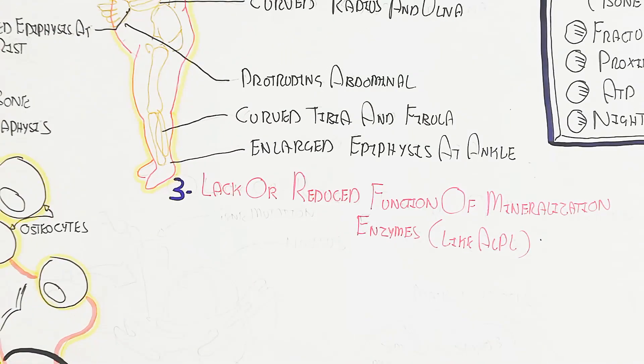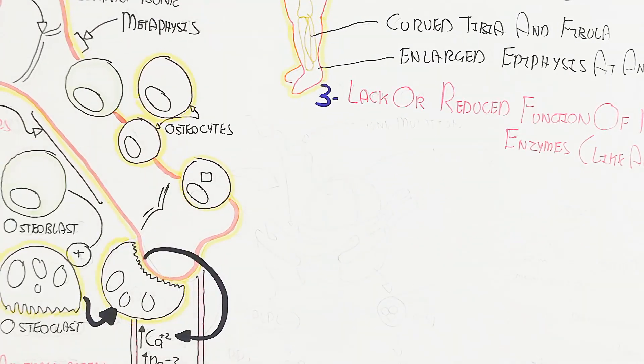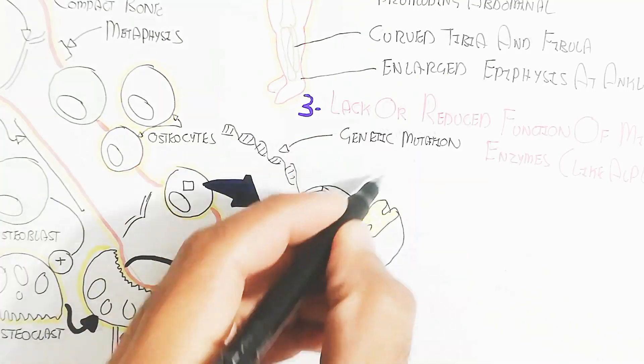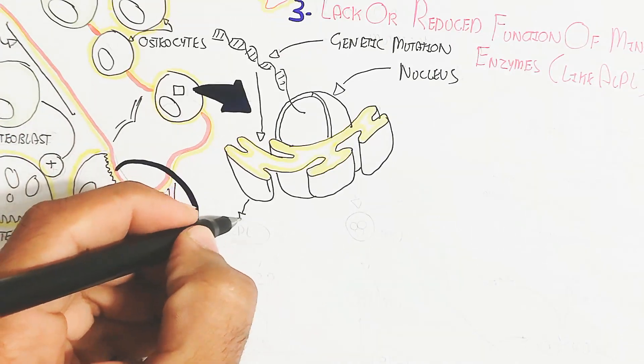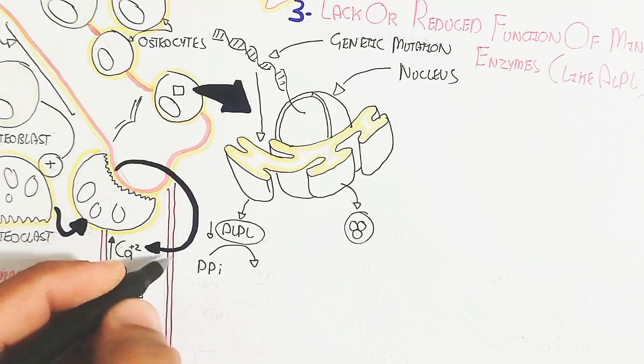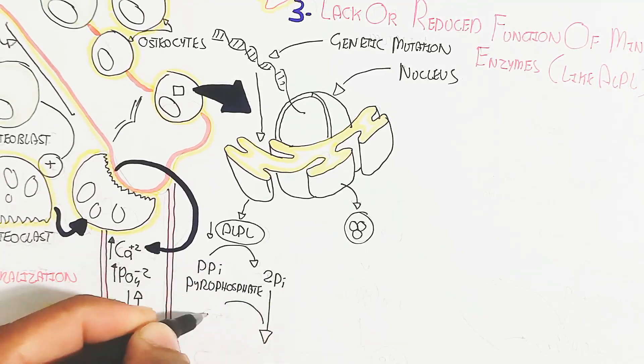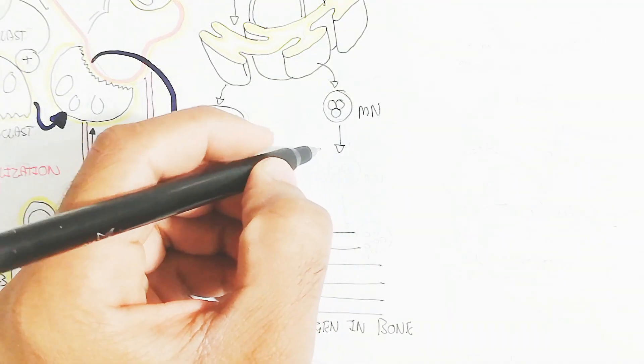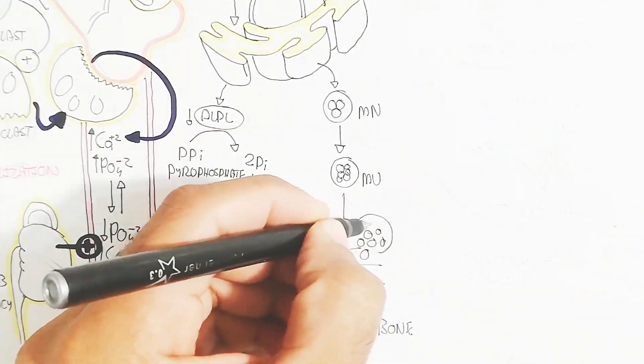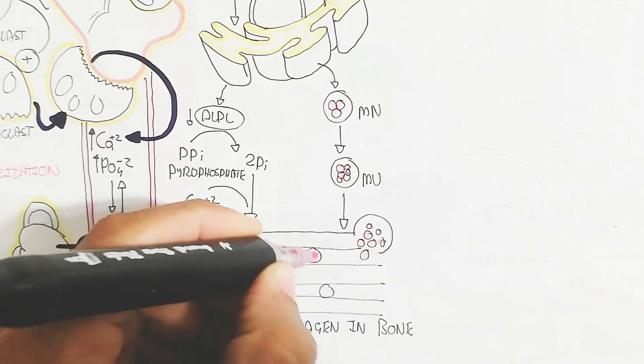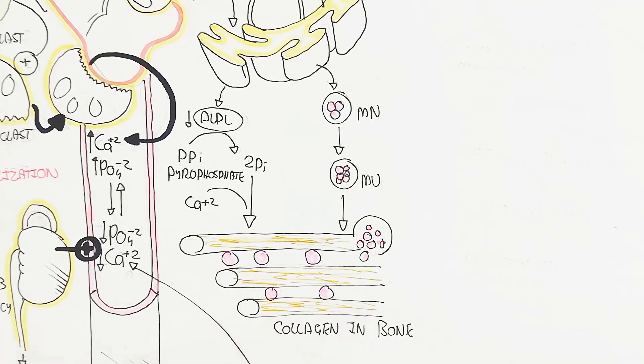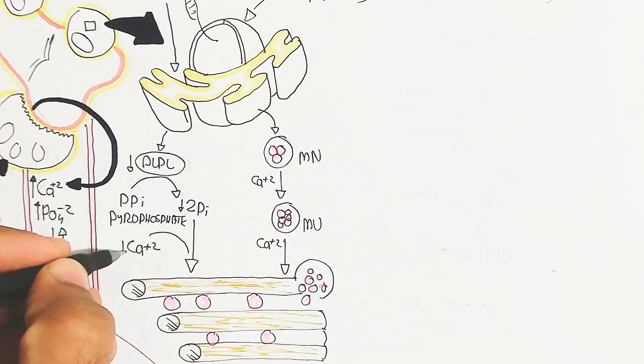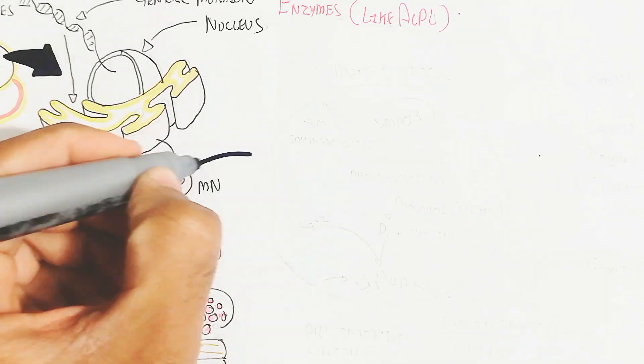Number three is basically a lack of reduced function of mineralization enzyme like ALPL. This is the bigger picture of the cell. Genetic mutation will lead to not producing that enzyme which is required for the synthesis of bone like deposition of calcium and phosphate. When the ALPL enzyme deficiency due to genetic mutation will lead to pyrophosphate not being split into simple phosphate. In this way the calcium binding will decrease, leading to decreased collagen in bone with calcium and phosphate.